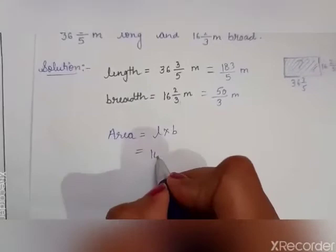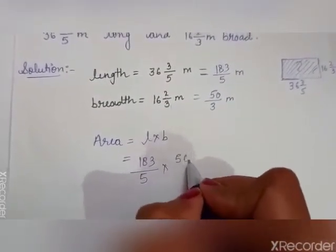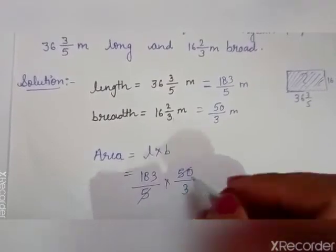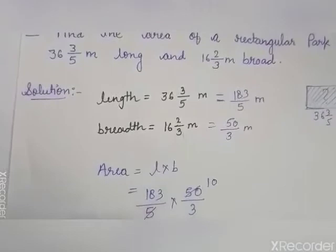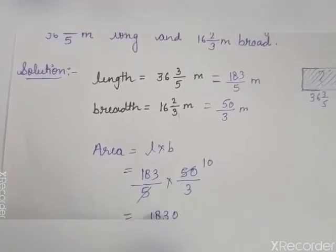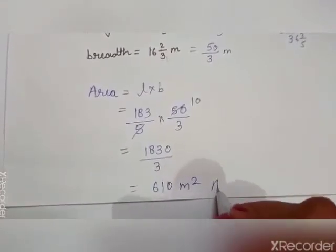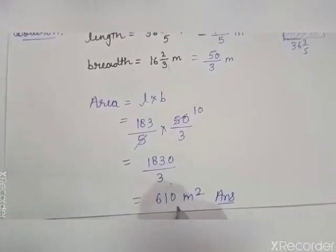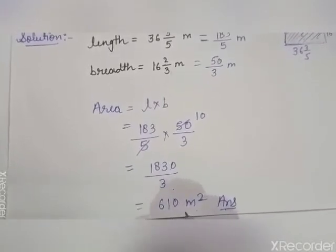Multiply 183 by 5 into 50 by 3. Simplify: cancel 5 and 50 — 50 divided by 5 gives 10. You get 183 into 10 by 3, which is 1830 by 3. Divide 1830 by 3 and you get 610 meter square. So, the area of the rectangular park is 610 meter square.